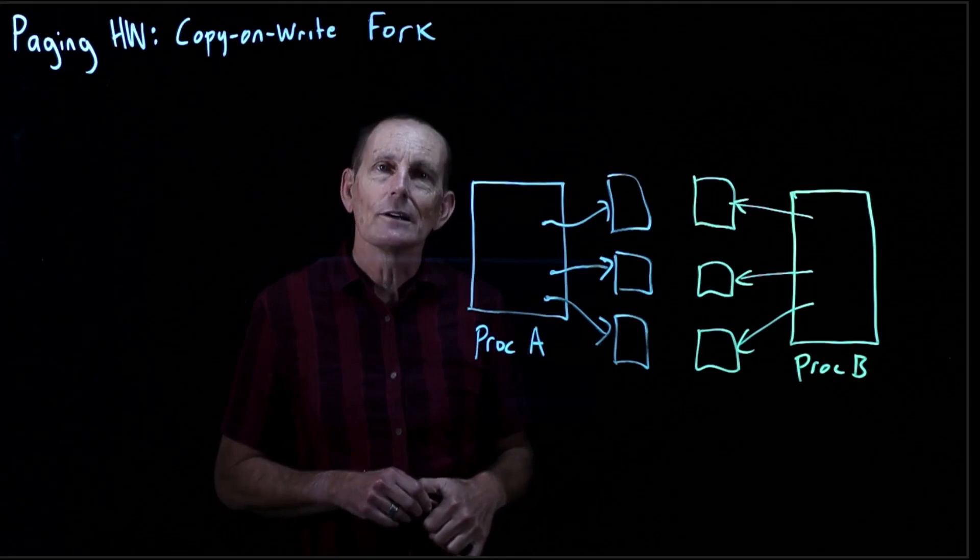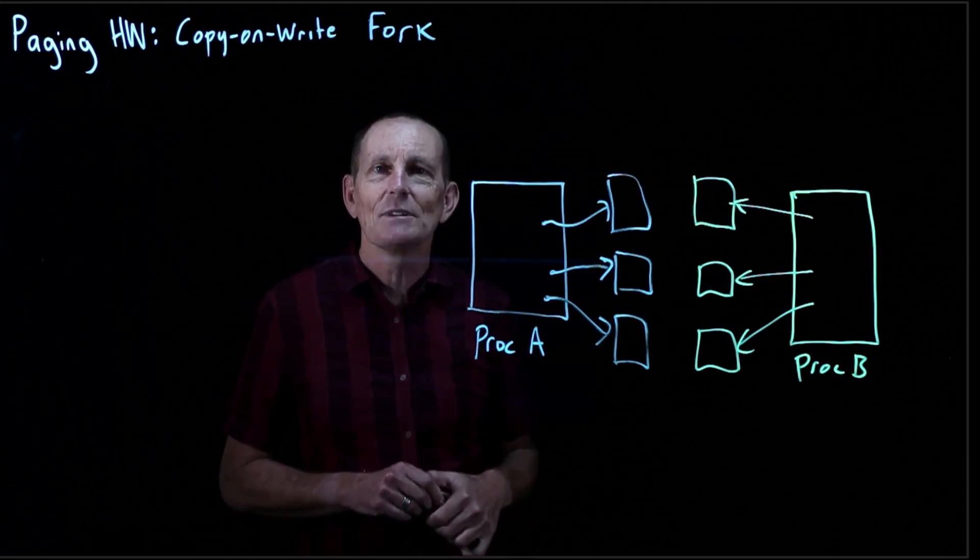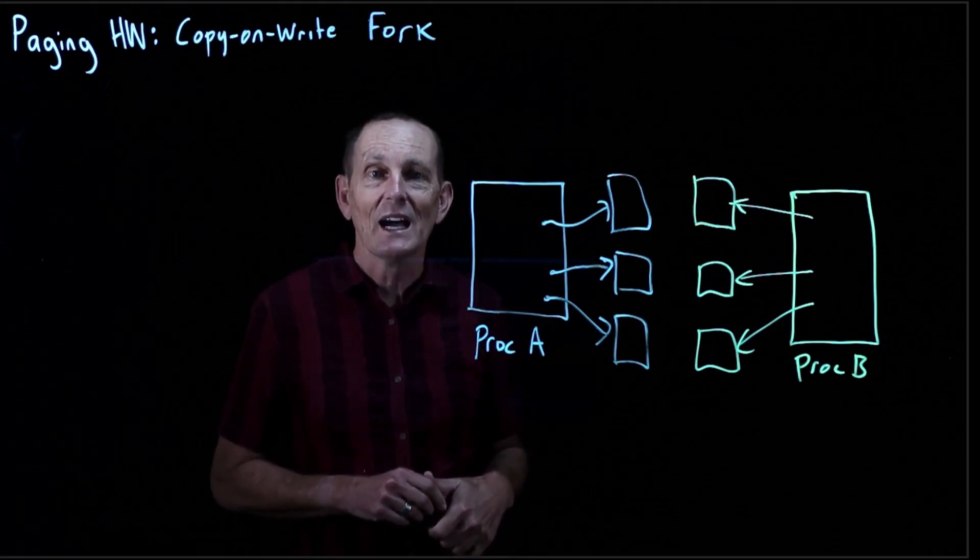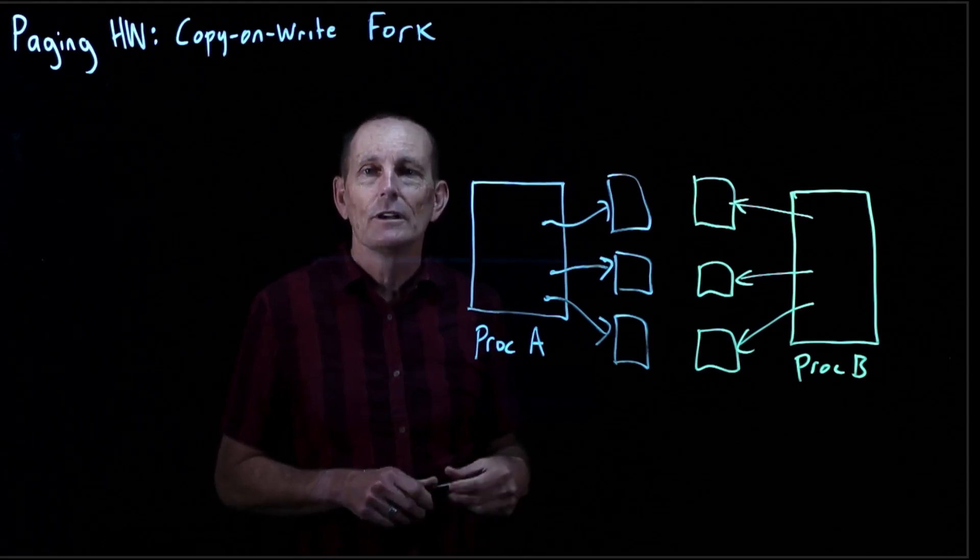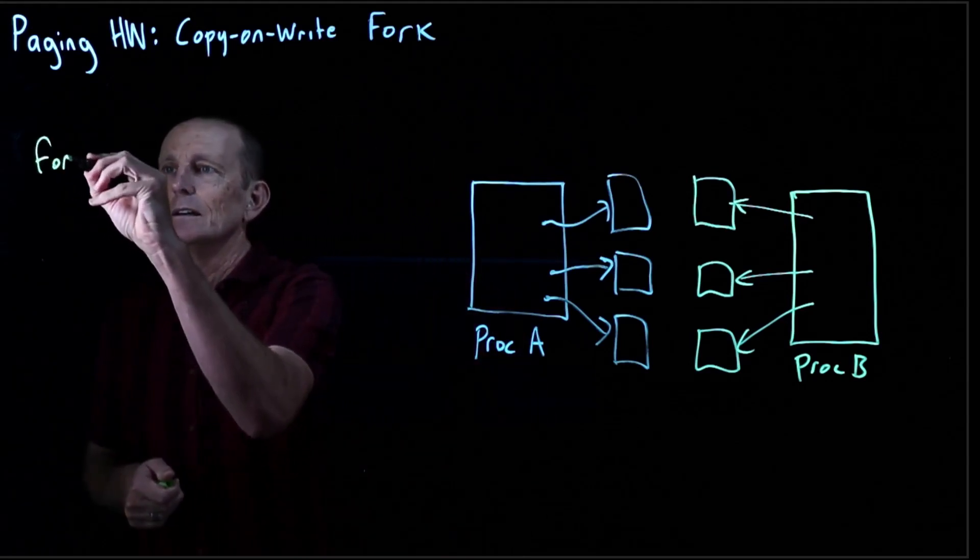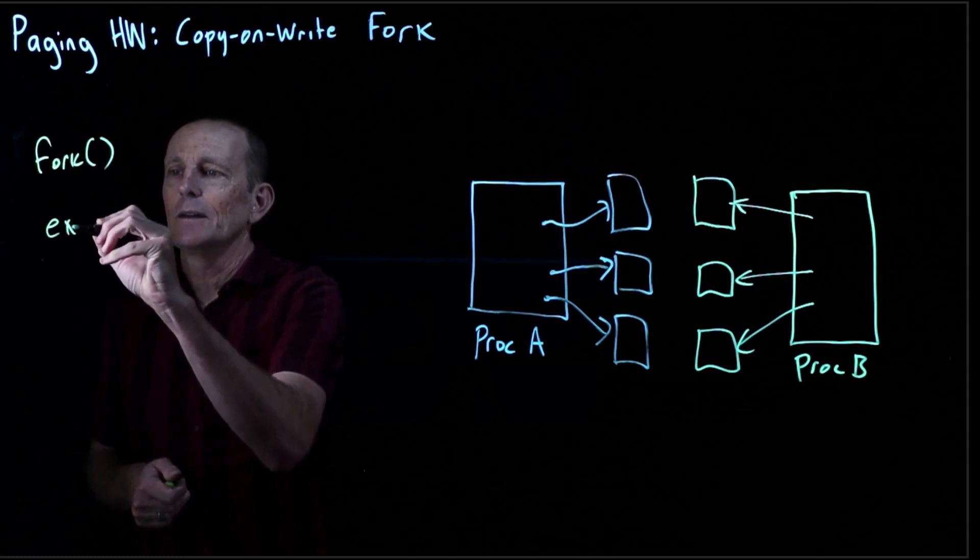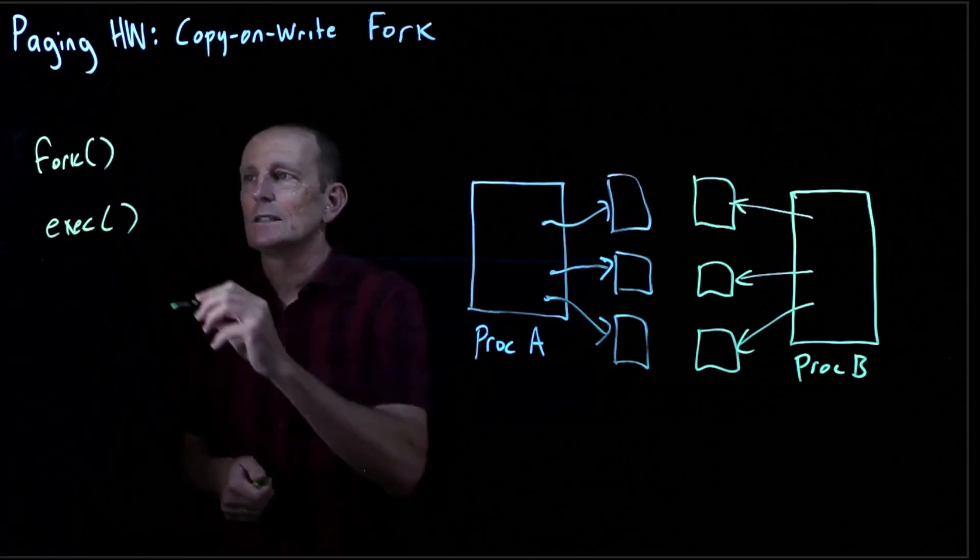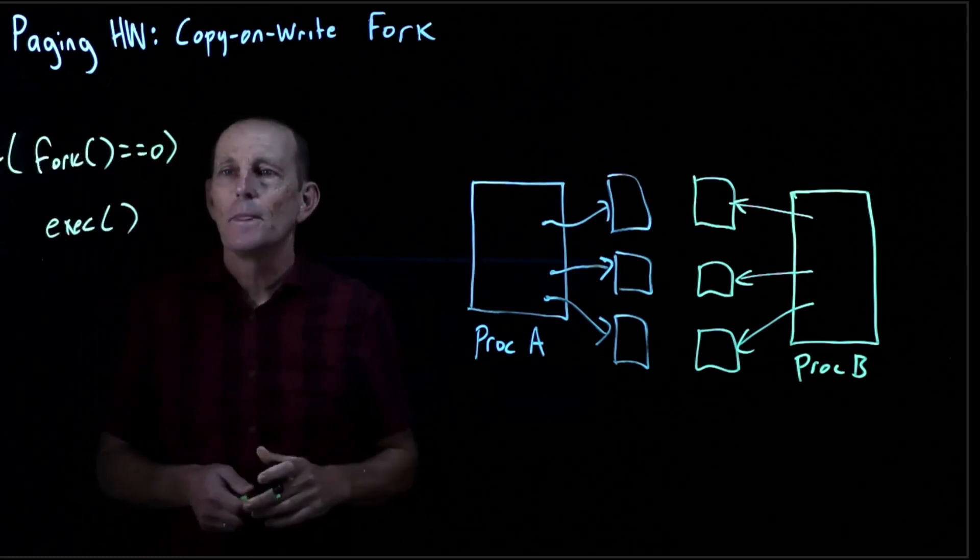But if we look, probably 99 times out of 100, or maybe 99.9 times out of 100, a fork is followed immediately by an exec. That is, the child process is going to do an exec.